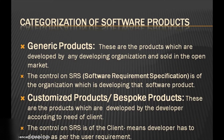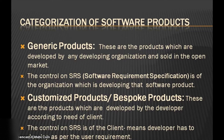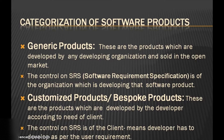Software products can be categorized into two broad categories: generic products and customized products. Generic products are developed by a developing organization and sold in the open market. The control on the SRS — software requirement specification — belongs to the organization developing that software product. For example, operating systems like Windows, DOS, and DBMS like Oracle.